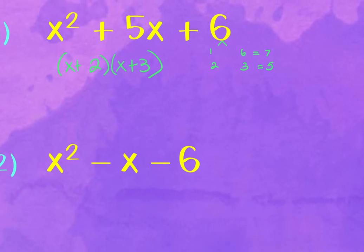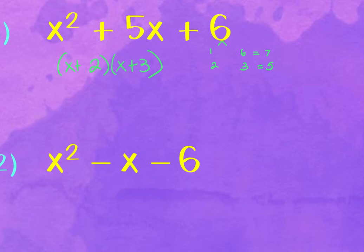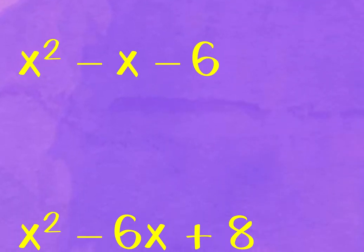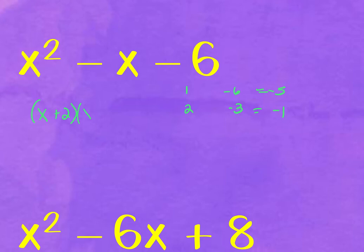Problem 2: last term is negative 6, so one sign is positive and one is negative. Middle term is negative, so the bigger factor is negative. Testing: positive 1 & negative 6 (sum −5), positive 2 & negative 3 (sum −1). The second combination works: (x + 2)(x − 3).